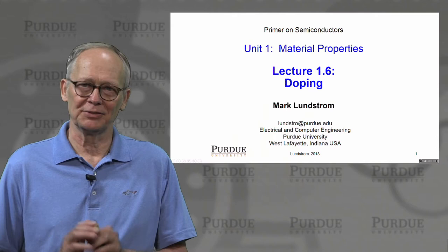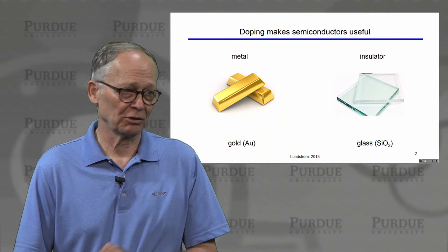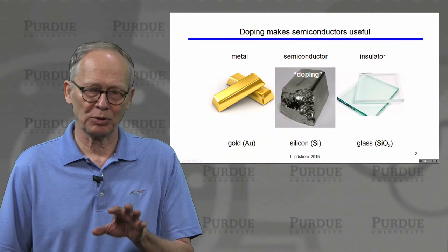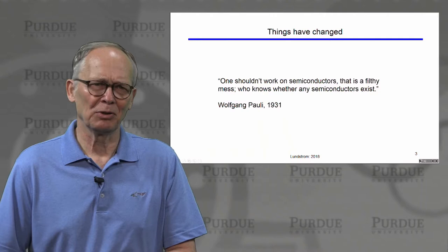Welcome back. Now we're ready to talk about the most important property of semiconductors: the fact that they can be doped. Metals are good electrical conductors, insulators are poor electrical conductors, and semiconductors are sort of in between. They're not good metals, they're not good insulators. But they have a remarkable property — we can control their properties such that they are highly metallic, or reasonably insulating, or anything in between. And that's what makes them so useful.